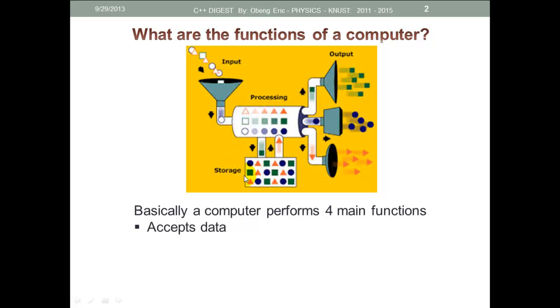So we have input, processing, output, and storage. These are the four main functions of every computer. Some computers are made specially to perform a particular function. Those kinds of computers are called specialized computers. Remember, the information of one processing activity can be the data for another.